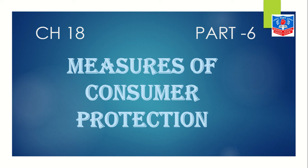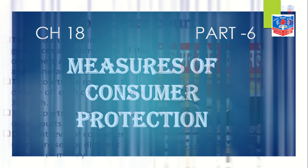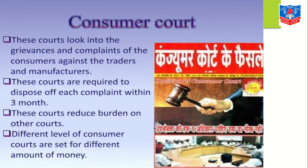As a consumer we have studied what are our rights and what are our duties. Now if we are cheated, the government has made some laws and acts for us. According to these laws and acts, we can go to the consumer courts for compensation or for the losses that we have incurred. These consumer courts look into the grievances and complaints of consumers against traders and manufacturers.